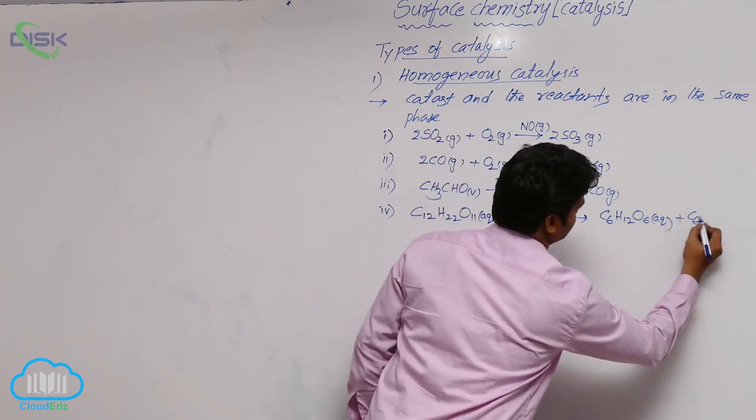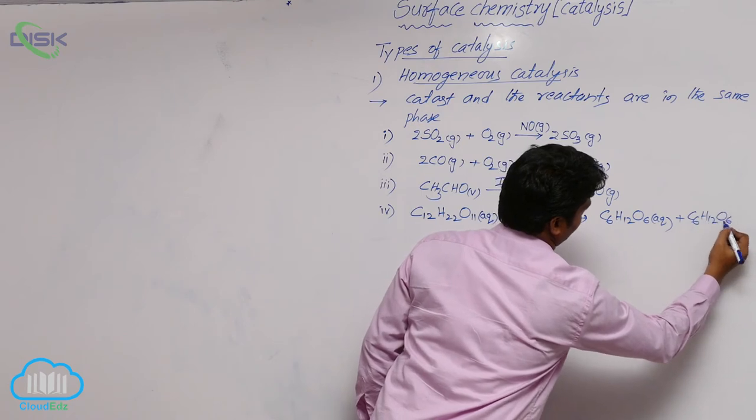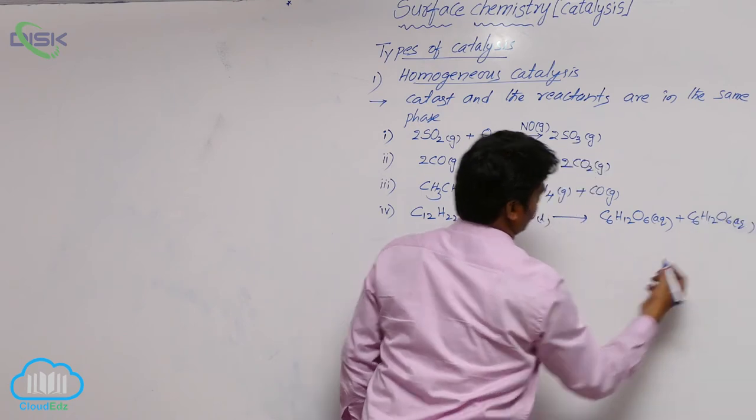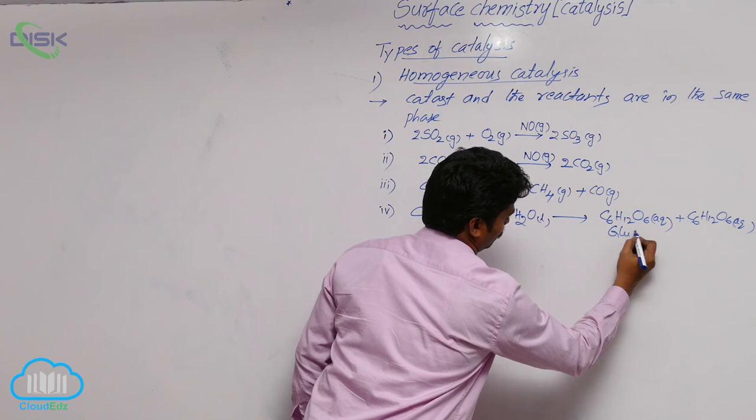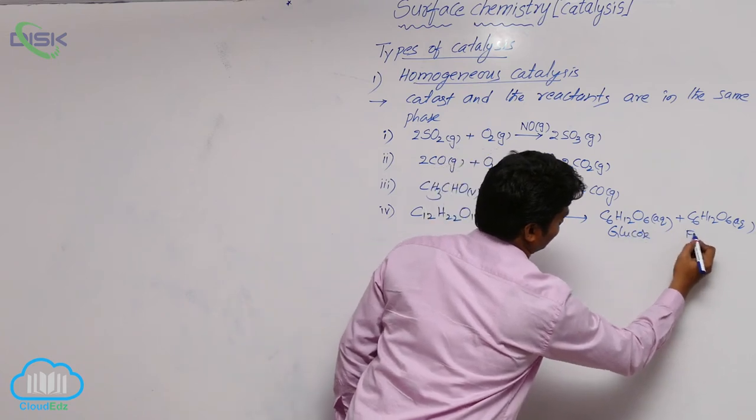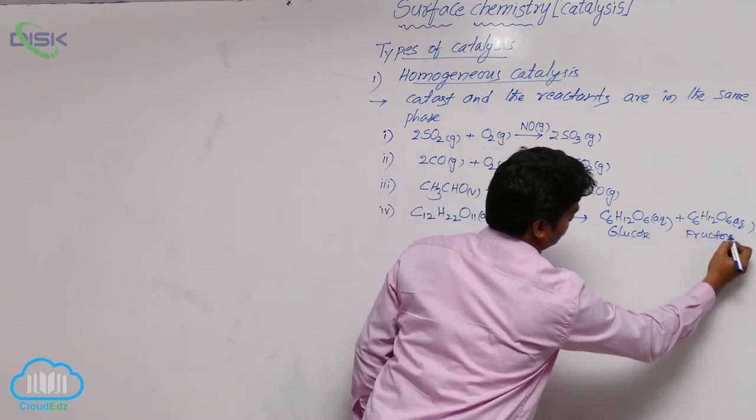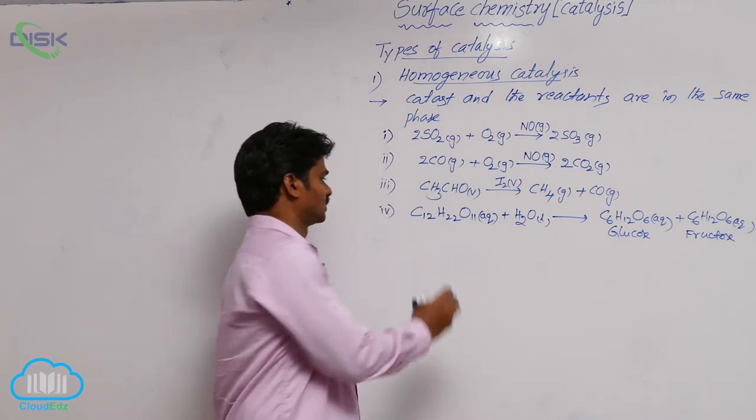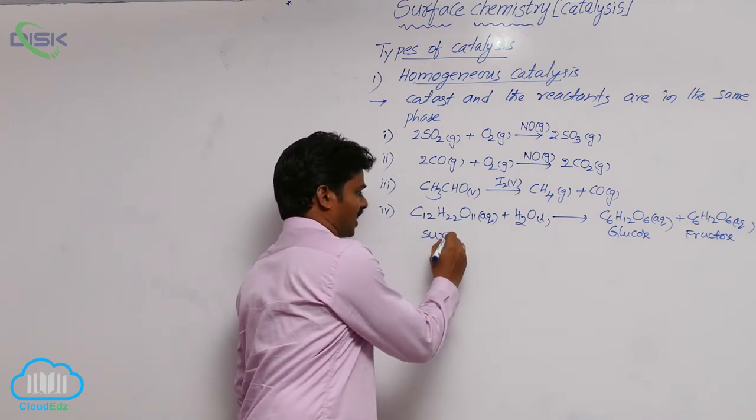C6H12O6, one is glucose, other one is fructose. Glucose and fructose are having the same formula, but they differ in their functional groups.